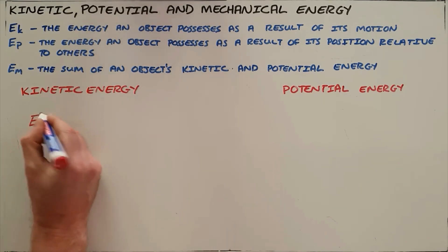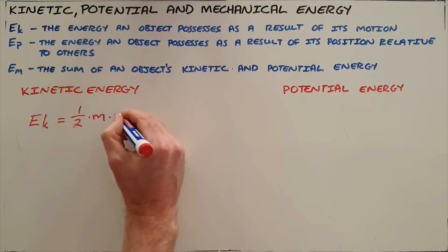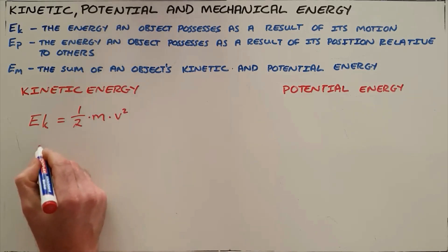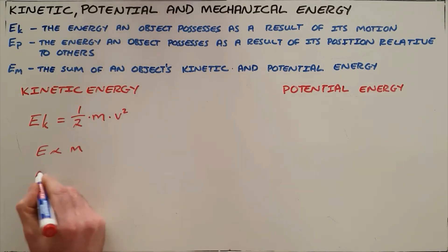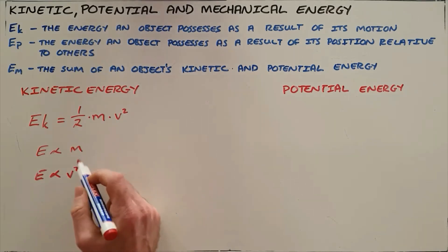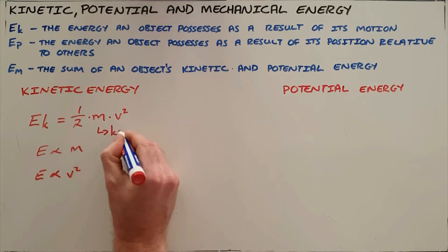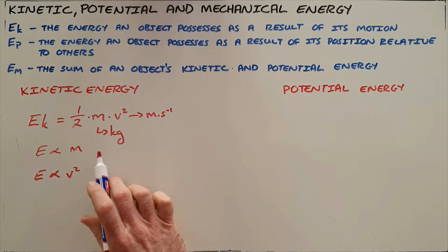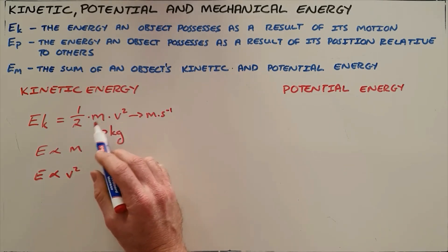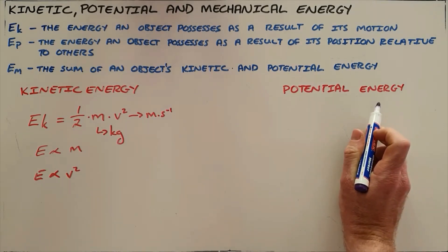Kinetic energy is given by EK = ½mv², so it is directly proportional to the mass of the object and directly proportional to the square of its velocity, showing an exponential relationship — the faster the object moves, the more energy it has. Mass must be in kilograms and velocity in meters per second. Increasing either mass or velocity means the moving object has more energy and would require more work to stop it or change that energy.